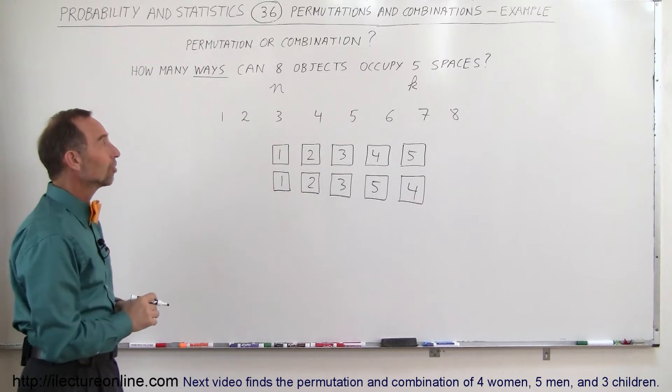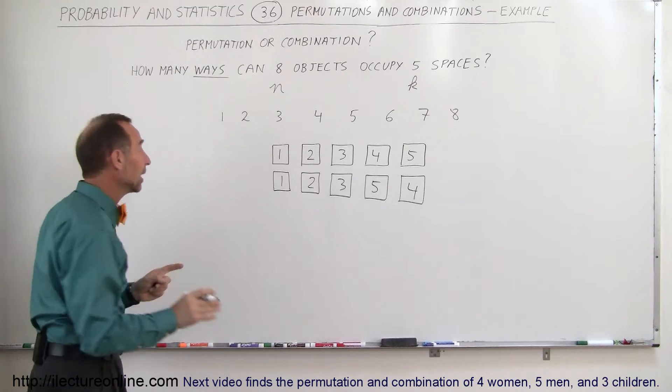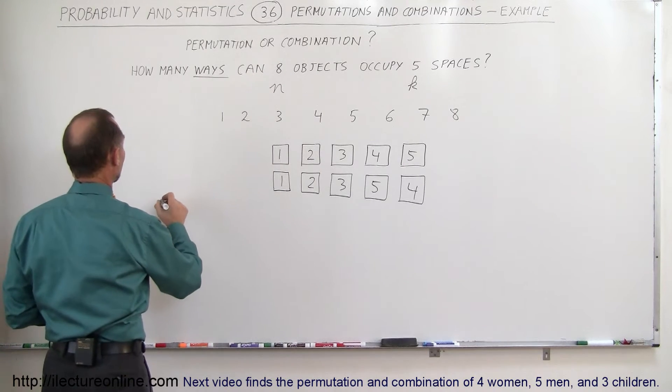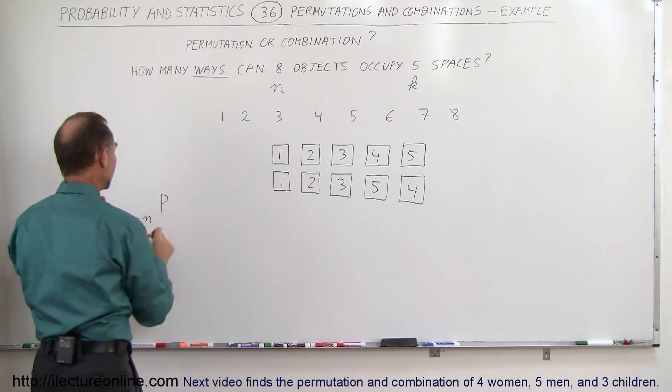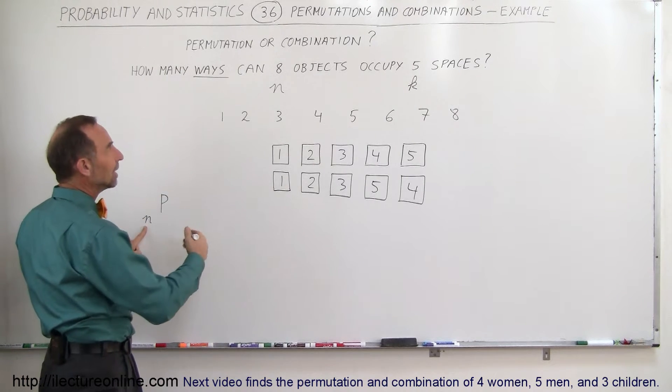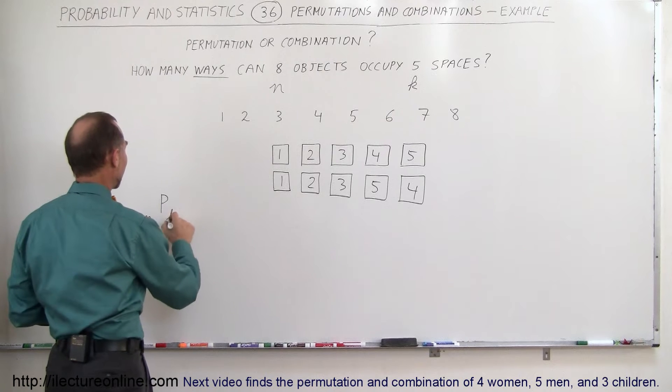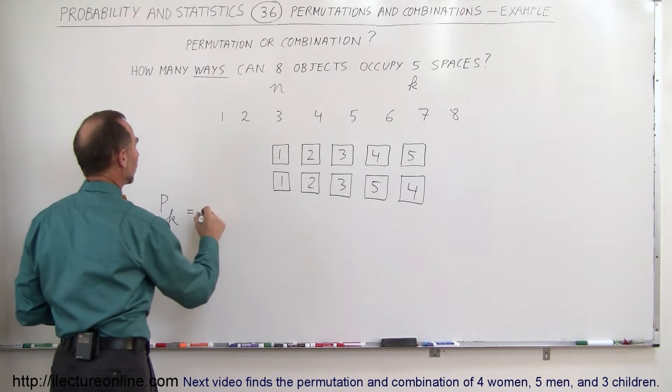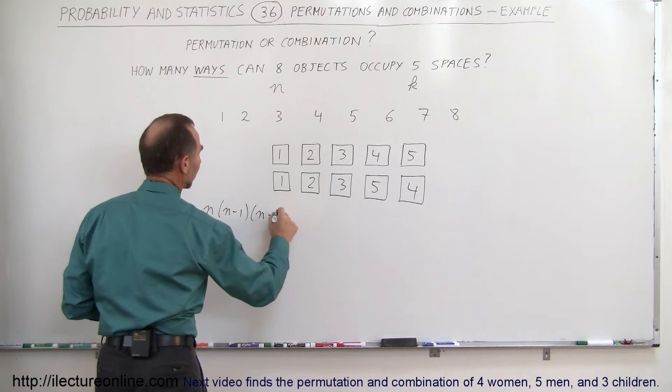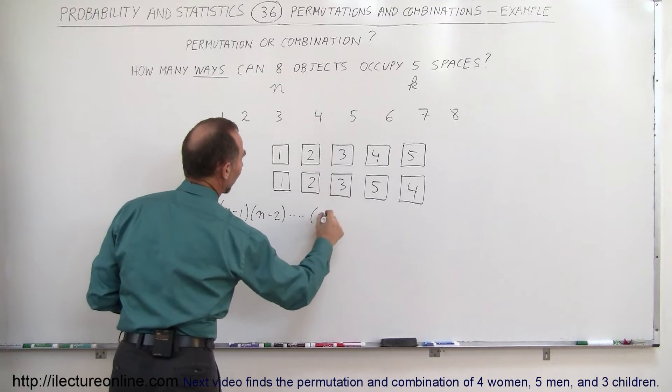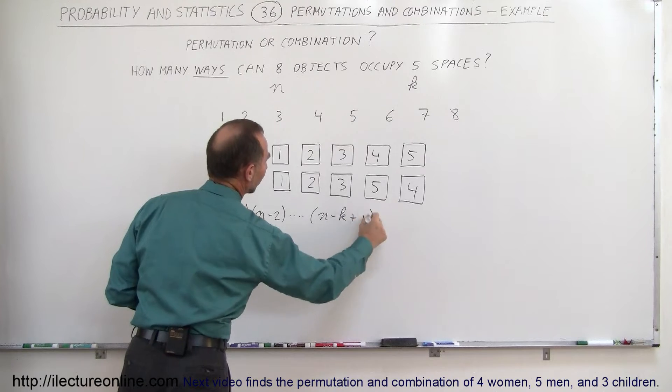Not so high for combinations. Remember the equation for permutations is as follows: that the number of permutations, starting with n quantities or n objects and k spaces, this will be equal to n times n minus 1 times n minus 2 all the way down to n minus k plus 1.